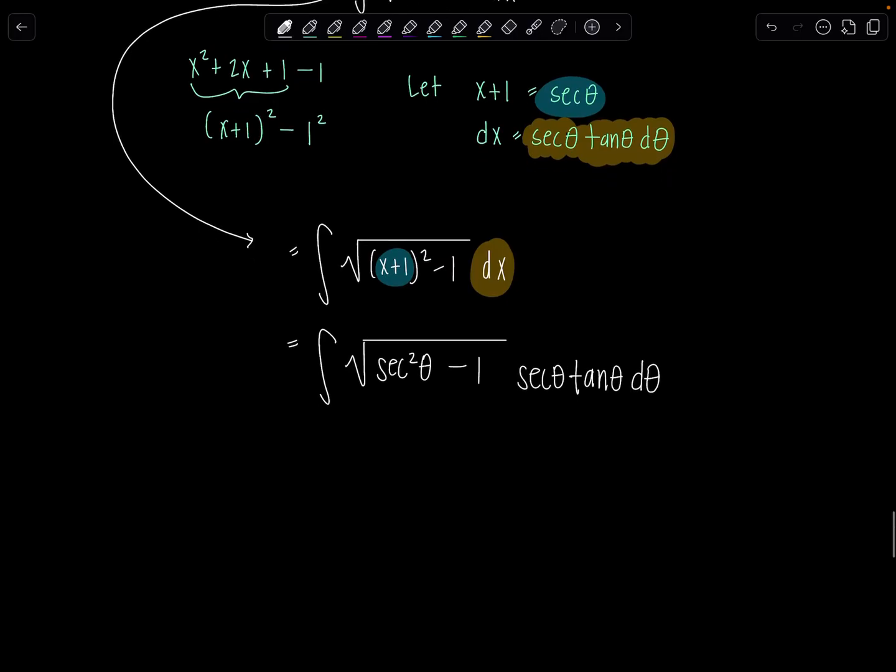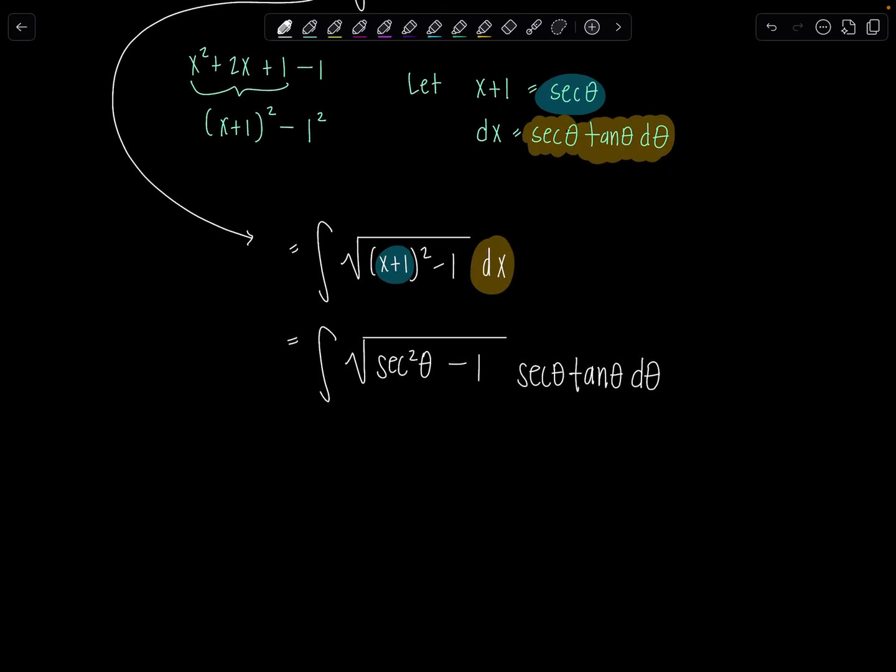Then from here, this is where the beauty of trig sub comes in. You're going to use your Pythagorean identities to rewrite the expression underneath the radical. So we know secant squared theta minus 1, that's tangent squared theta. I have square root of tangent squared theta. Technically, it's absolute value of tan theta, but we always restrict theta so that the trig function will be positive.